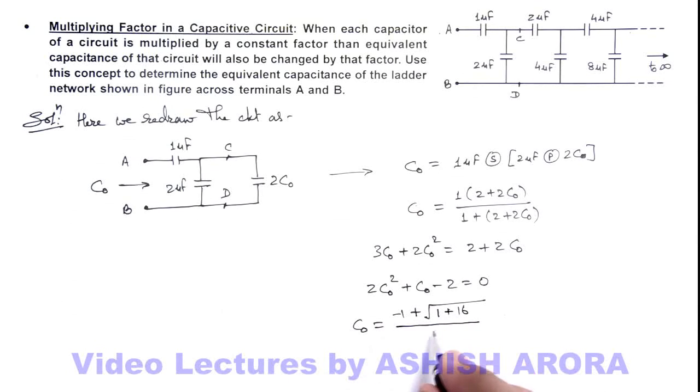Divided by 4. So the result I am getting is root 17 minus 1 by 4 microfarad. That is the result of this problem.